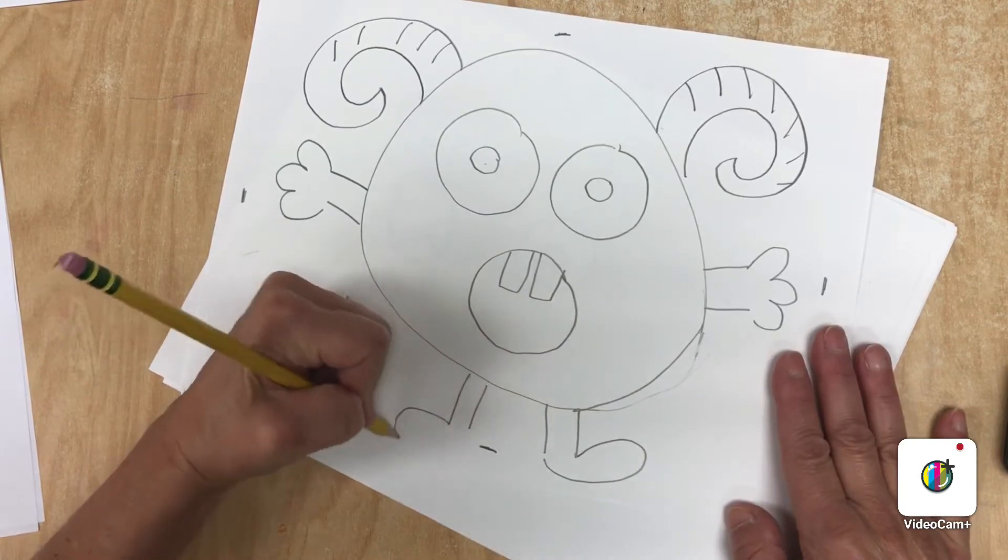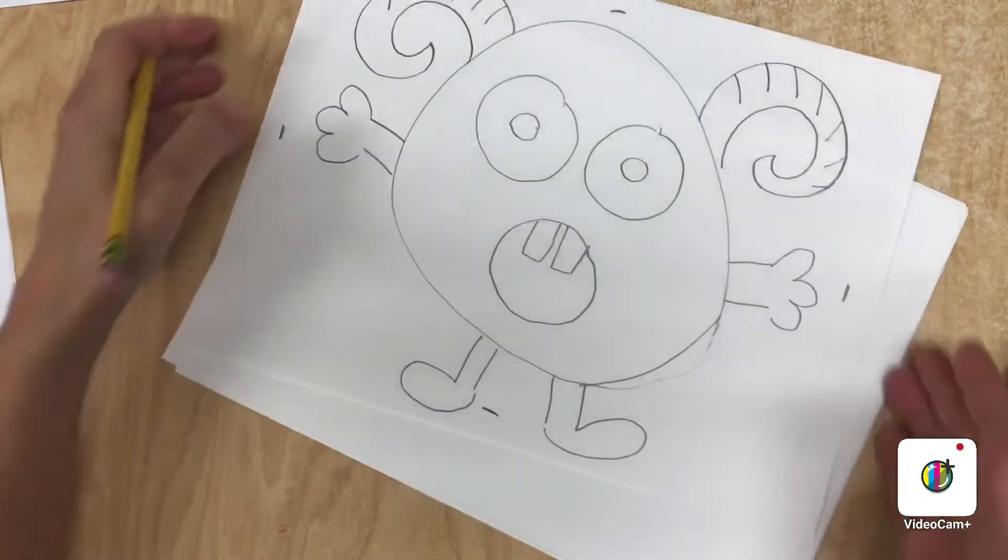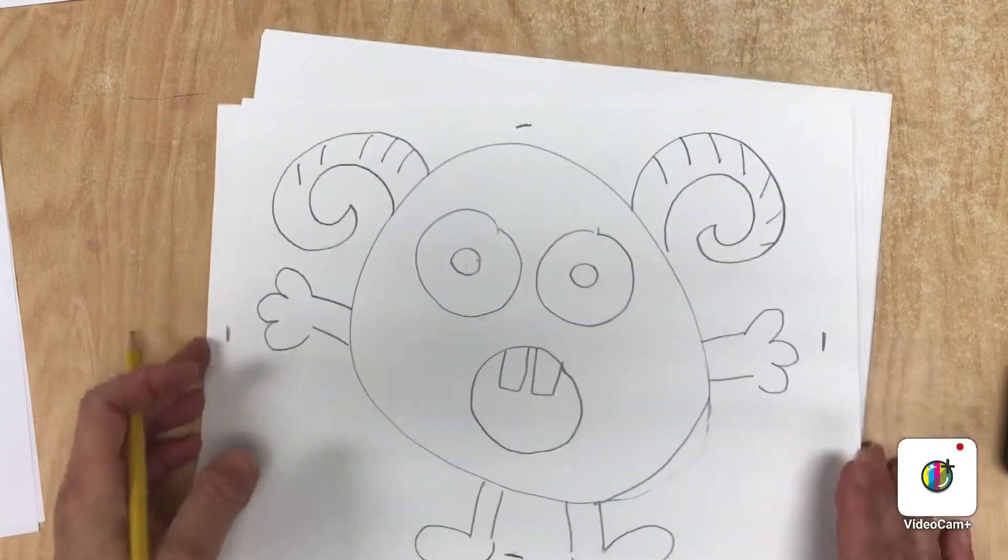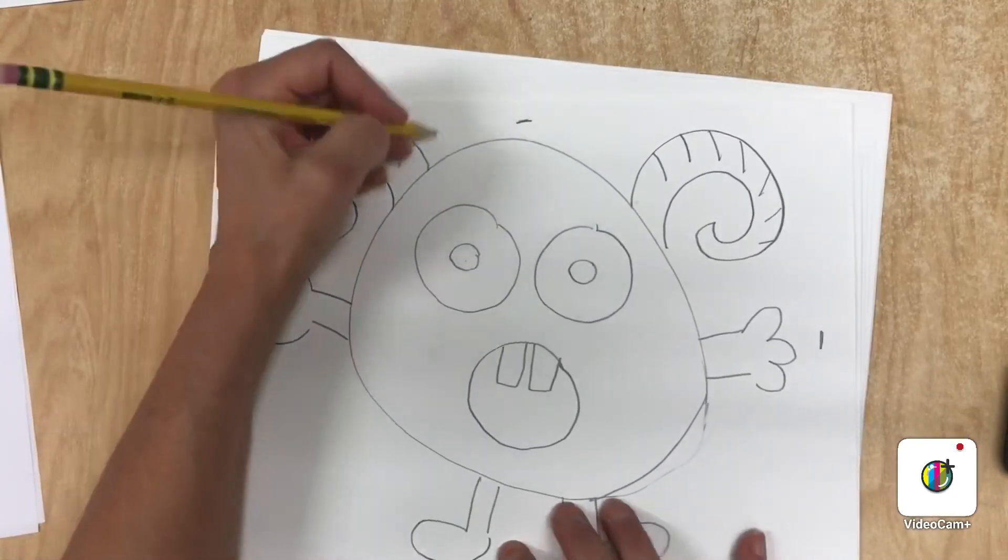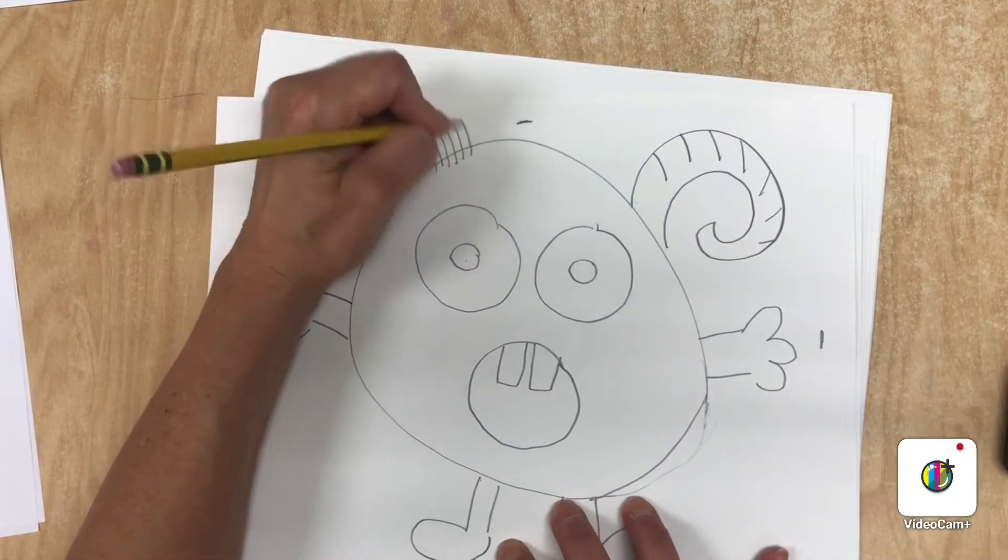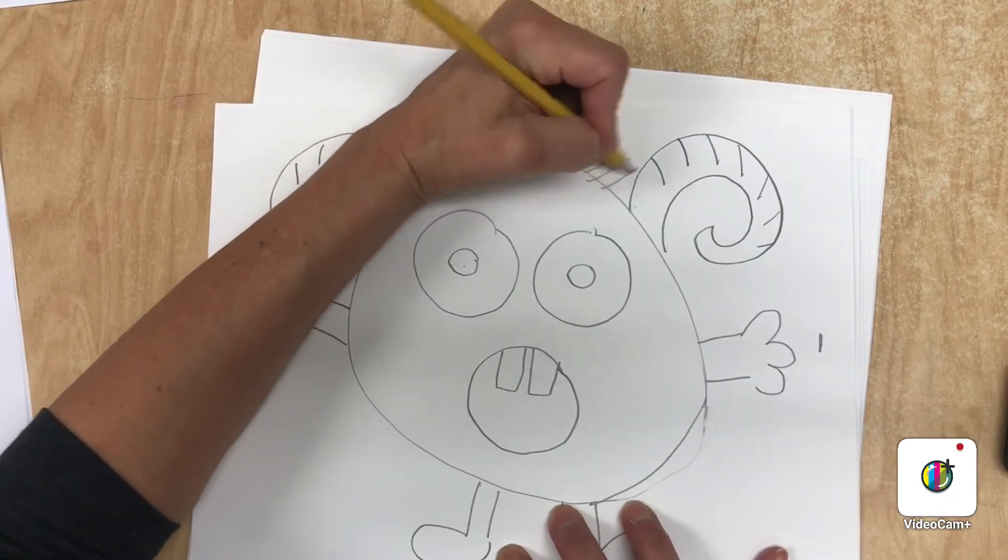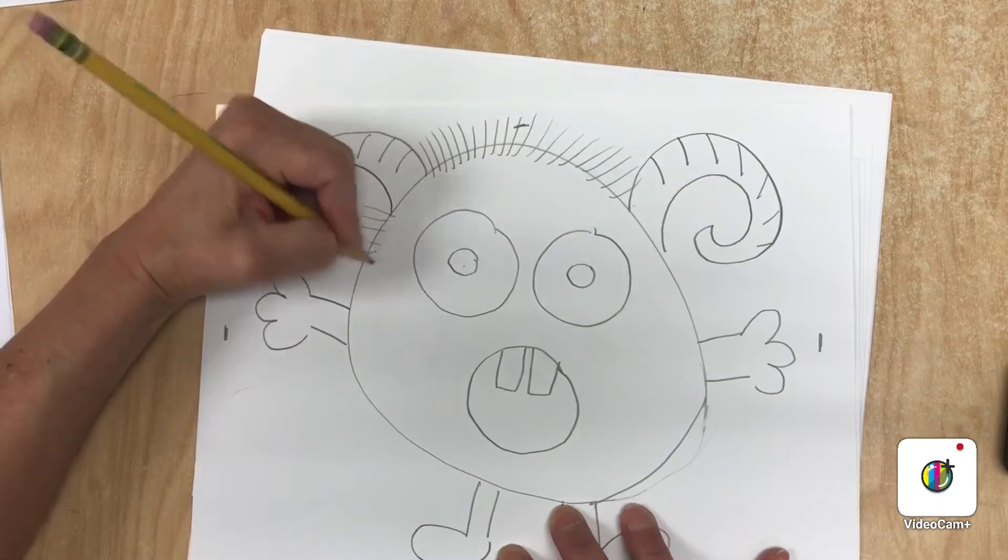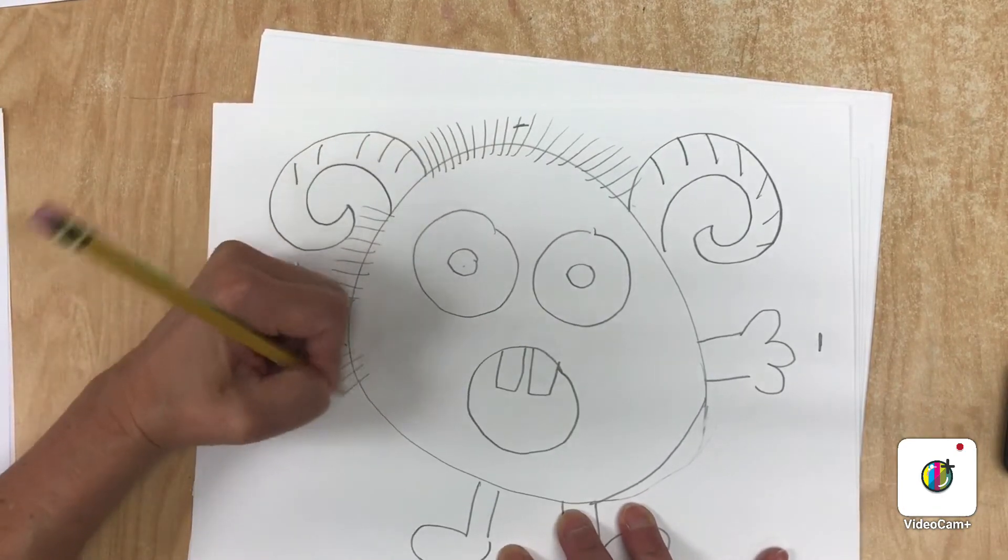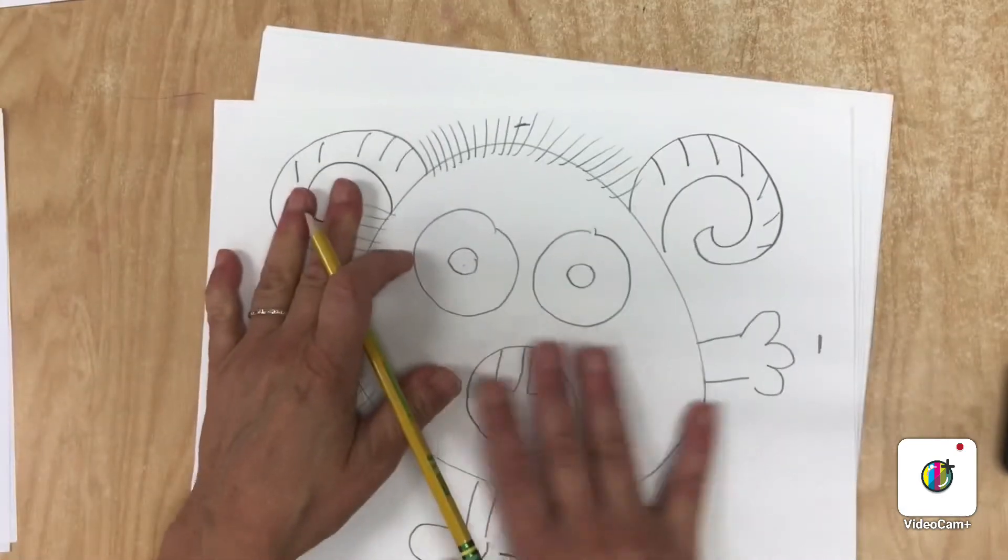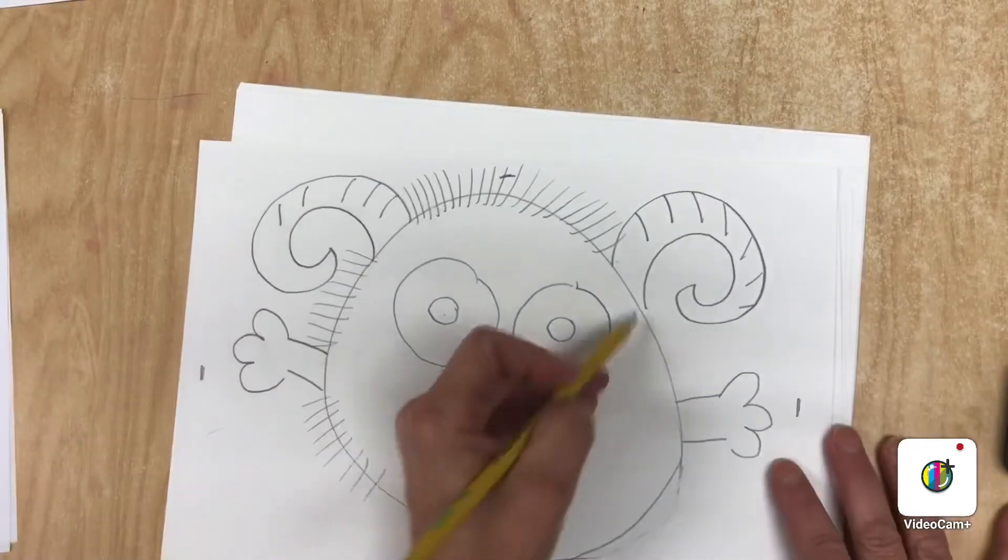Now for the texture, I want mine to look really fuzzy, and one way to do that is with lines all around. So that looks like a lot of fuzzy fur. Okay, I'm not going to finish that because you might not even do it that way.